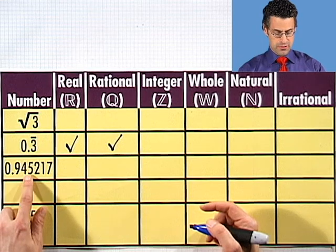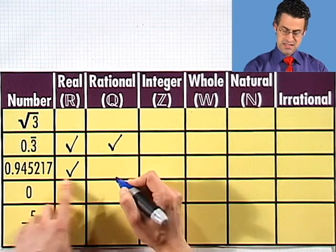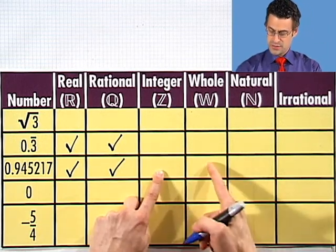What about 0.945? Well, that decimal expansion terminates. It's a real number. And since the decimal expansion terminates, it's a rational number, not an integer, whole number, natural number, or irrational.